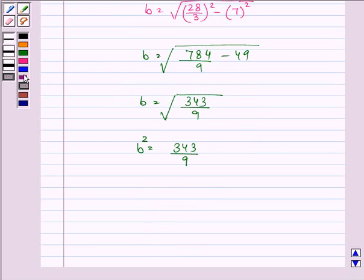Now we know the value of a is equal to 7, b square is equal to 343 by 9, and c is equal to 28 by 3.